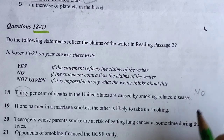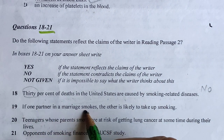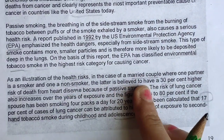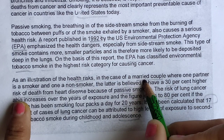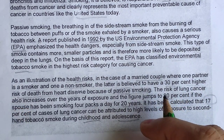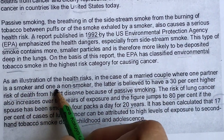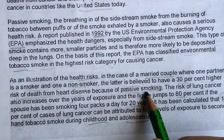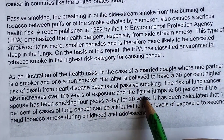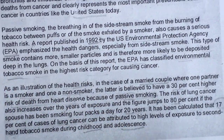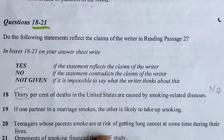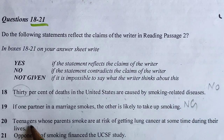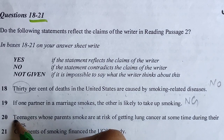Question 19: 'If one partner in a marriage smokes, the other is likely to take up smoking.' We know there is information about married couples: 'where one partner is a smoker and one a non-smoker, the latter is believed to have 30% higher risk of death from heart disease because of passive smoking; the risk of lung cancer also increases, figure jumps to 80%.' But they are not discussing whether the non-smoking partner is likely to take up smoking — so the answer is Not Given.